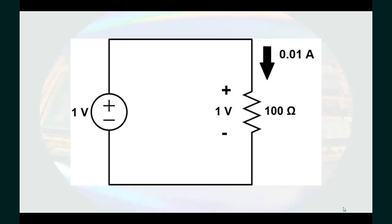From our power equation in the last video, power is equal to voltage times current. The power dissipated by the resistor is 1 volt times 0.01 amps, or a positive 0.1 watts.